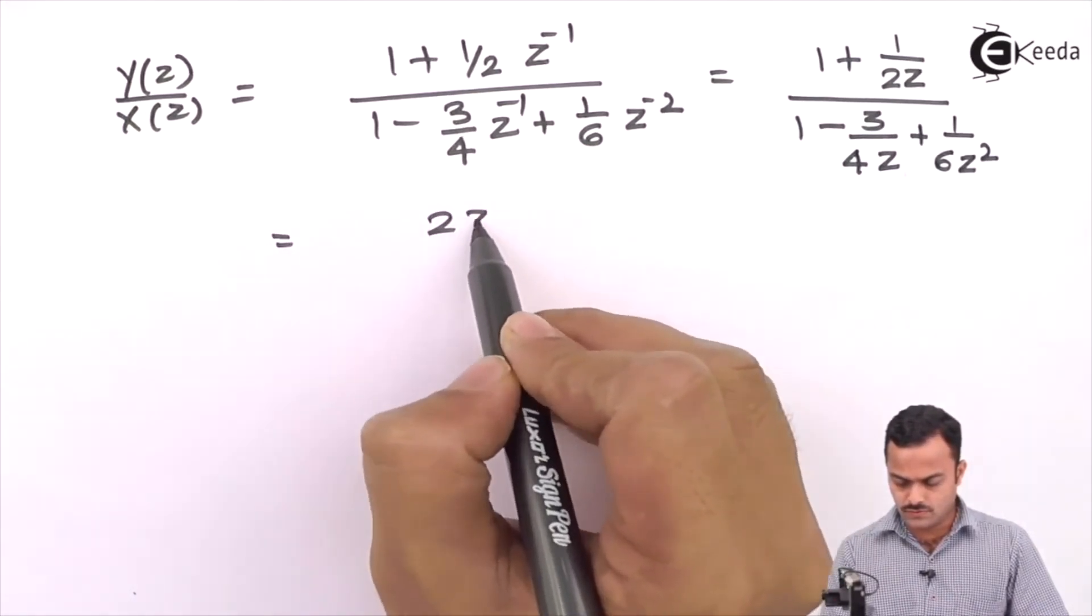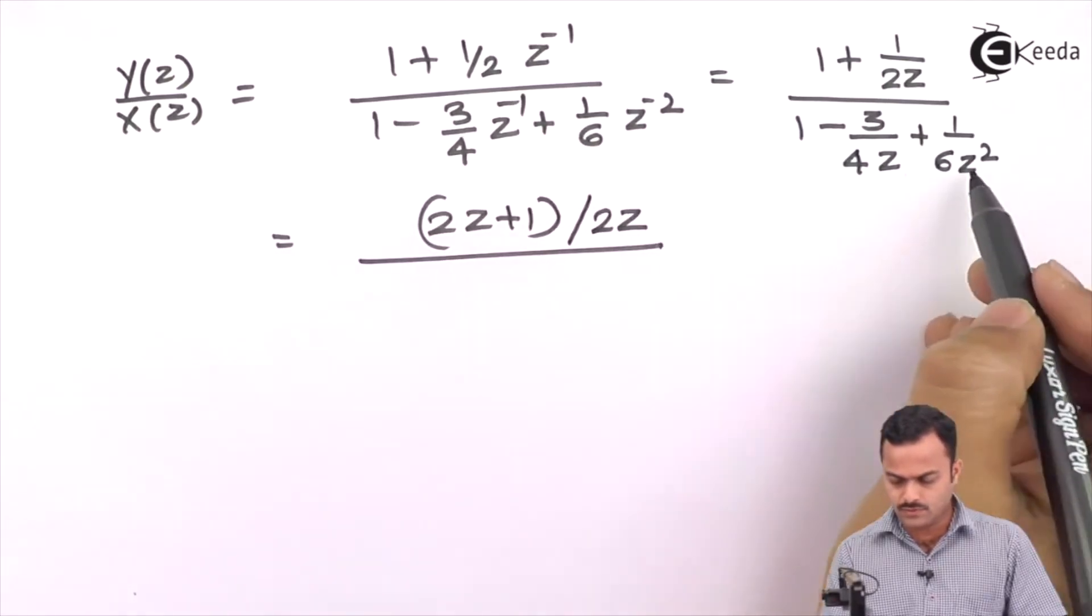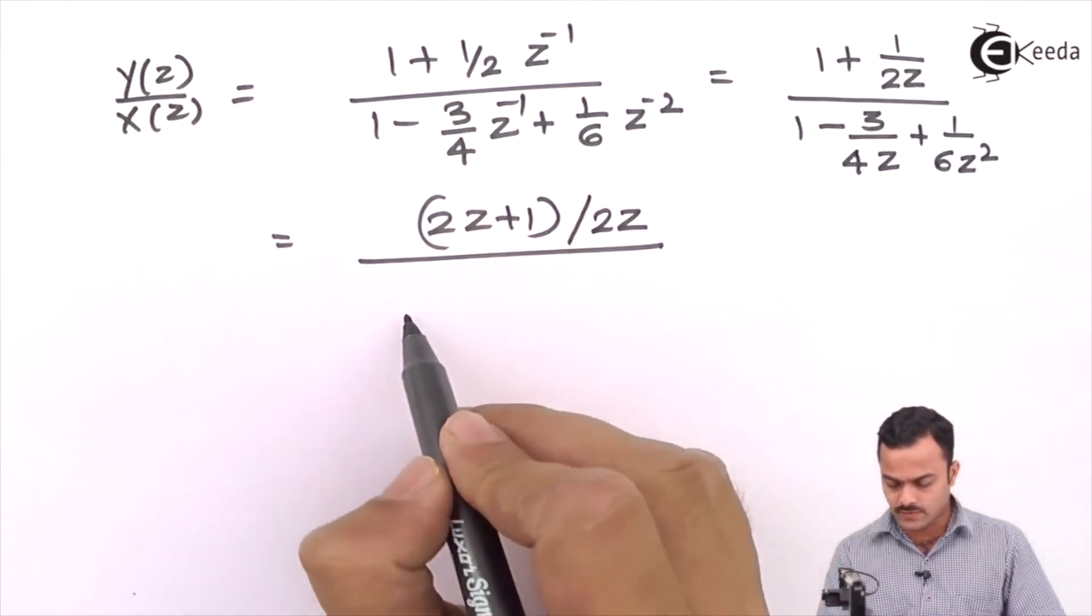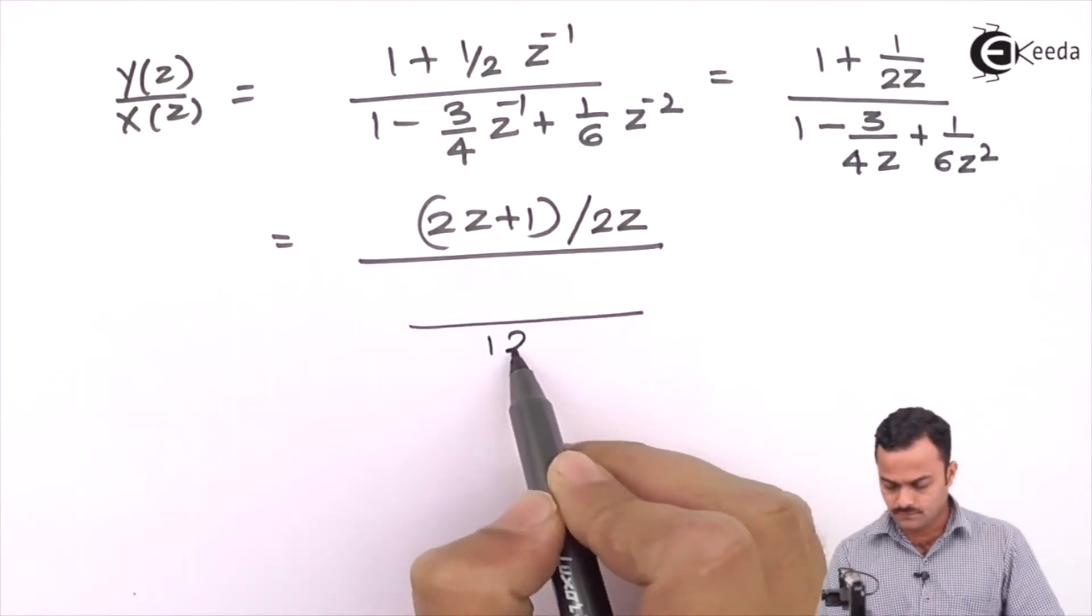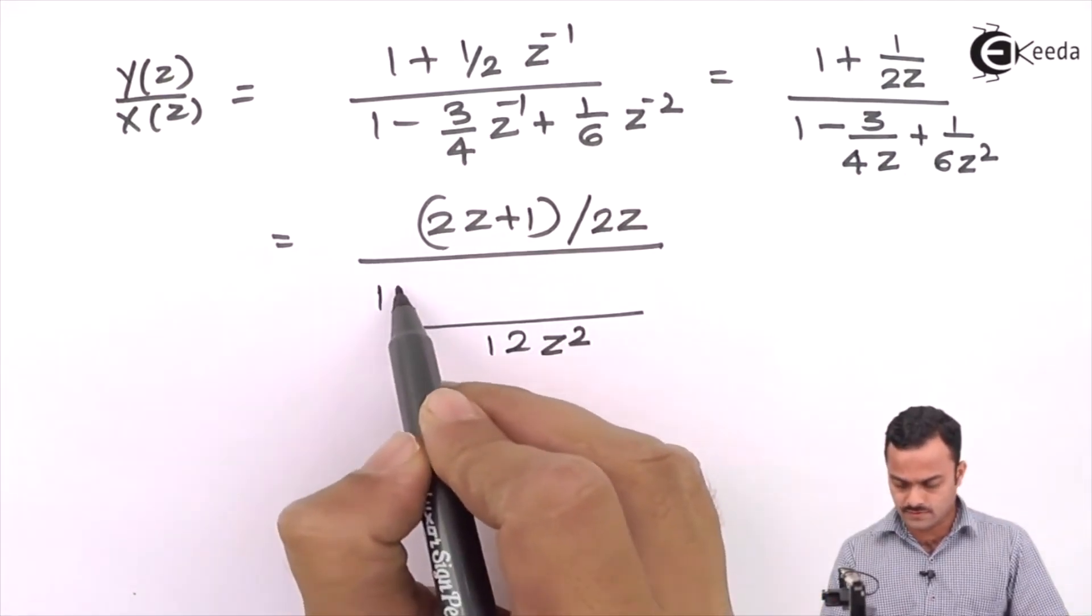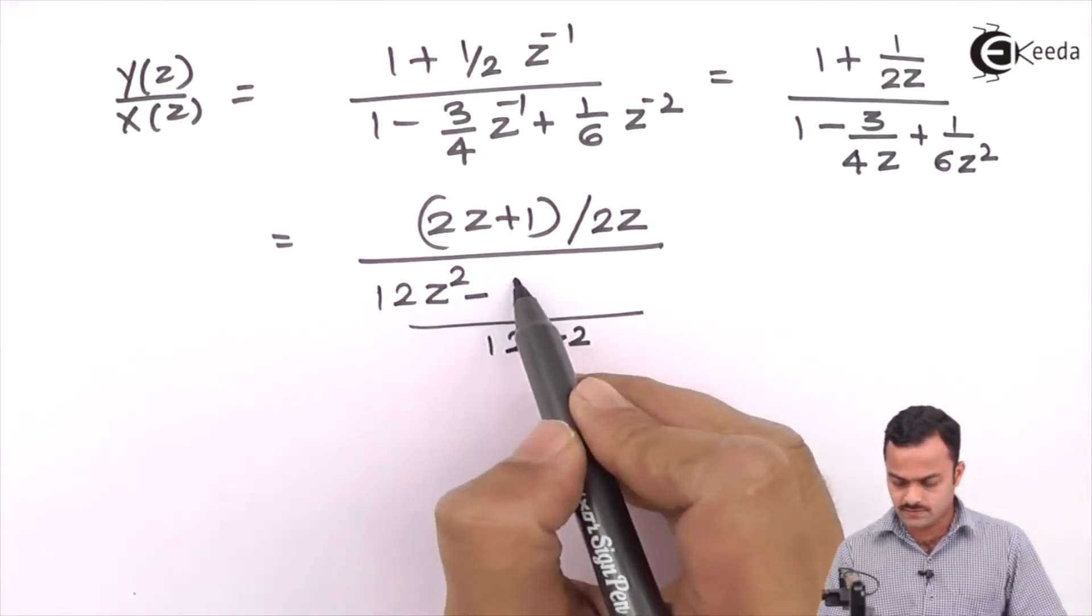So (2z + 1)/(2z^(-1)) upon, the LCM is 12z^2. That will give us, 12z^2 here. I need to multiply with 3z, so that is -9z.